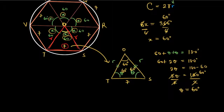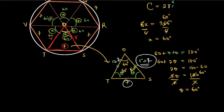Since all three angles — at O, T, and S — are each 60 degrees, triangle OTS is an equilateral triangle. In an equilateral triangle all sides are equal, so since TS is 7 cm, the radius OT and OS are also 7 cm. Therefore the radius of the circle is 7 cm.